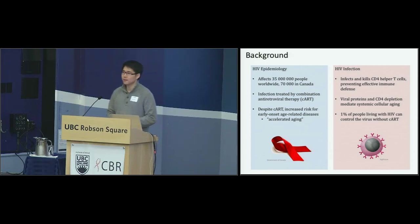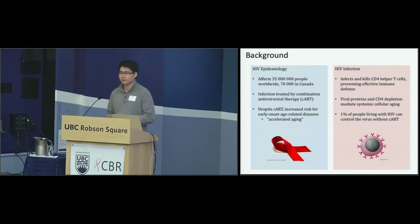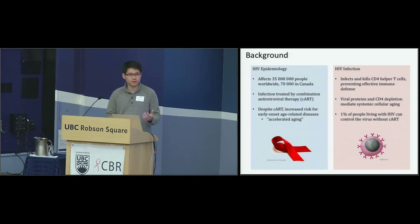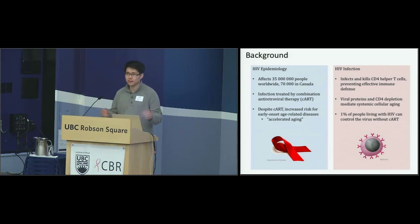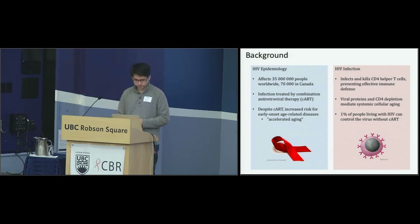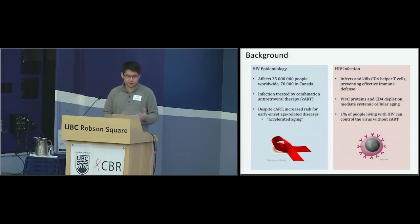HIV infects CD4 cells, but only about one percent of all CD4 cells, which make up about one in a million nucleated blood cells. What we're looking at is the systemic effect of these tiny amounts of CD4 cells being infected with HIV — that's activated immune system, chronic inflammation, viral proteins causing apoptosis and other effects. We think all these systemic effects mediate systemic cellular aging in the immune system.